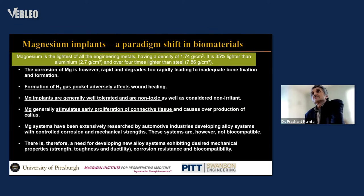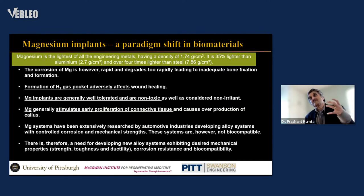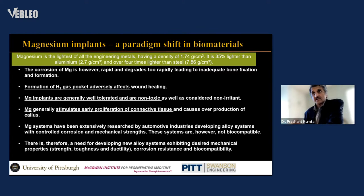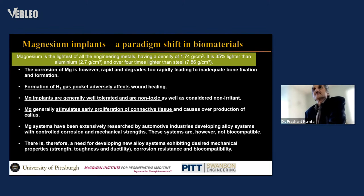Magnesium is the lightest engineered metal, with a density of 1.7 g/cm³, perfectly matched with natural bone. The corrosion of magnesium is the problem, but it provides a new paradigm shift in biomaterials — a metal well-matched with natural bone that can resolve in the body. It forms a hydroxide, which is then attacked by chlorides in the body to form magnesium chloride — a solid salt that can be excreted in urine and feces — so it can be eliminated and does not accumulate in the body, making it very attractive.